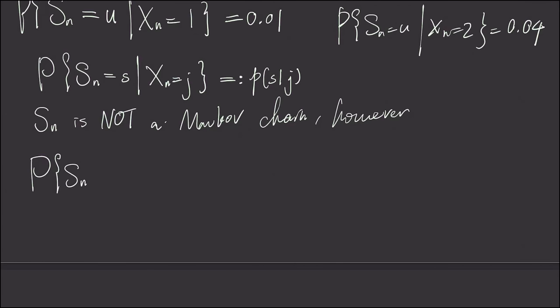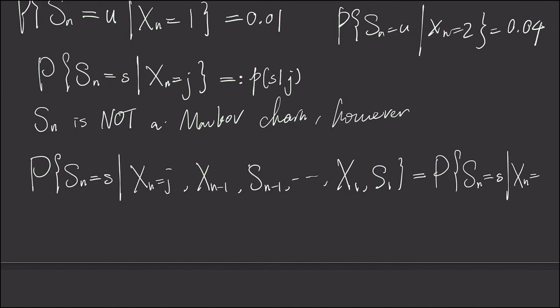Given production at previous time steps, for example, we know that xn is j, but we also know xn-1, Sn-1, and until x1, s1. And this is the same as probability of S sub n is little s, given x sub n is little j.